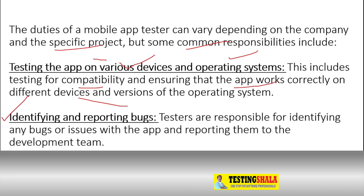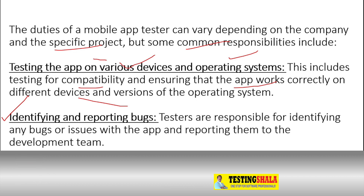The second responsibility is: after testing the mobile app, whenever you find an issue, you will be identifying those issues and logging them in defect tracking tools, and reporting those issues to the development team. If required, you will also be making escalations to project management based on the severity of a given defect.